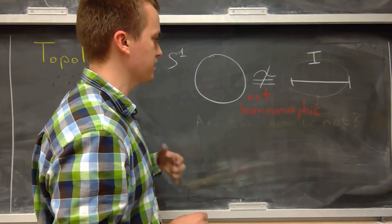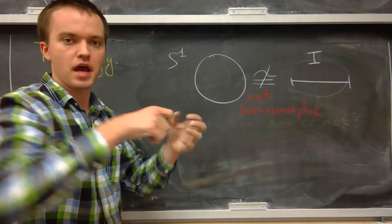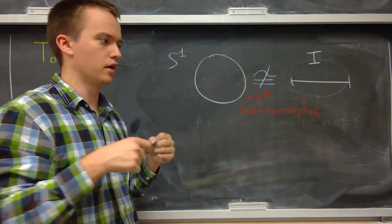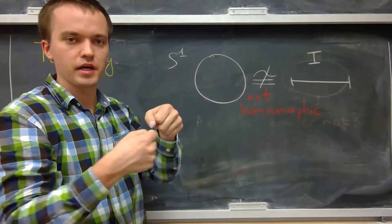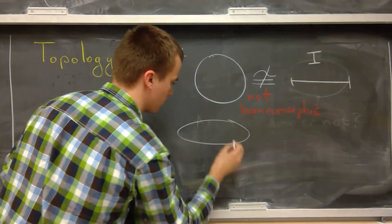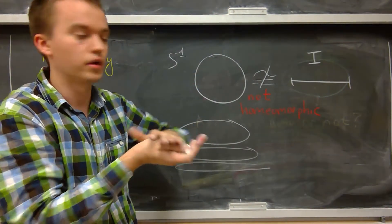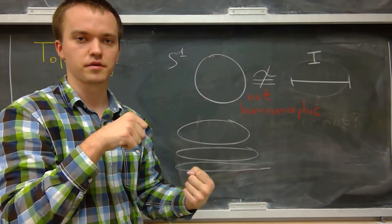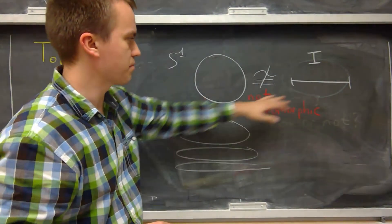What does homeomorphic mean? It means there exists a mapping between two spaces such that you can deform one into the other — you are not allowed to break it or cut and reattach it; you can only squeeze or stretch it. If you take the circle and try to deform it, you can never turn it into a line interval. You might shrink it, but being homeomorphic requires the map to be bijective — points never overlap.